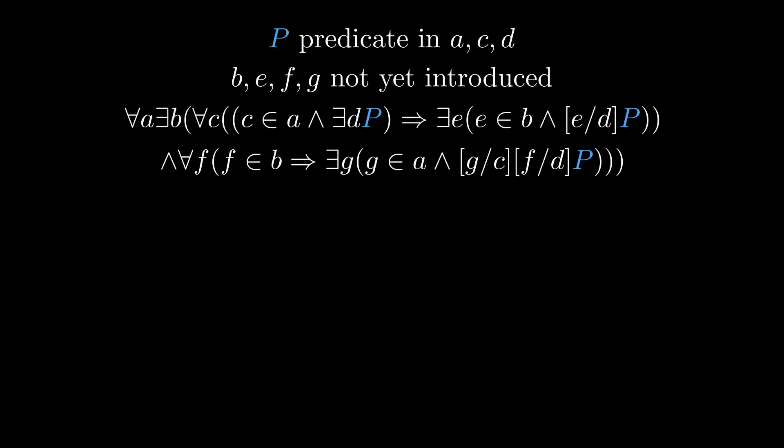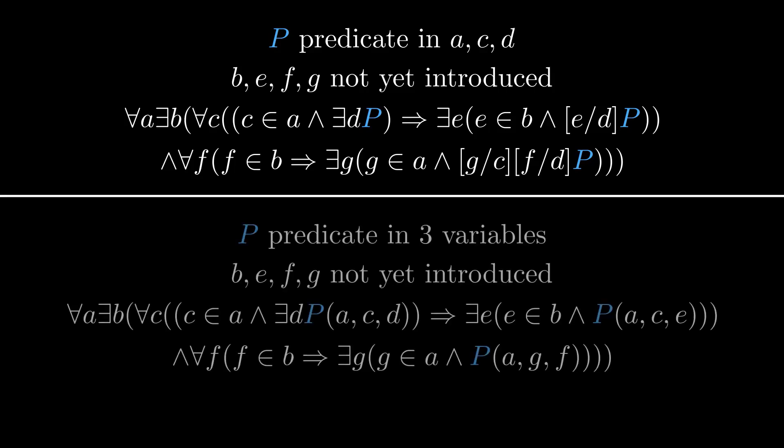The same applies to predicates in any number of variables. As an example, recall the axiom schema of refinement introduced in the previous video, which looked like this. In the alternate notation, we would write it like this.